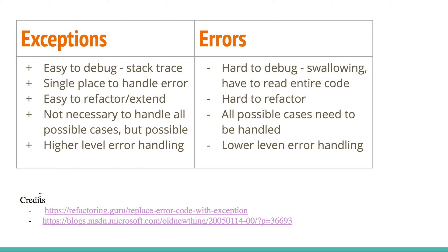You can extend exceptions very easily, but with error handling you have to change many areas of your code and extension is not trivial. Refactoring happens a lot of the time, and exceptions make it easier — whereas with error handling you have to change a lot of code to understand what errors are happening and how to extend them when new errors are discovered. Also, error handling requires you to handle all possible cases really well, which is a very hard problem.